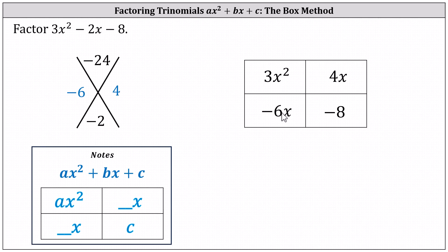And now we determine the greatest common factor in each column and each row. If the first term in any row or column is negative, we use a negative greatest common factor. Looking at the first column, we have 3x squared and negative 6x — the greatest common factor is 3x. In the second column, we have 4x and negative 8 — the greatest common factor is 4. Moving to the first row, we have 3x squared and 4x — the greatest common factor is x.